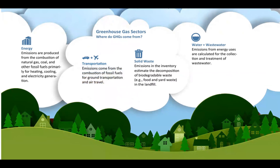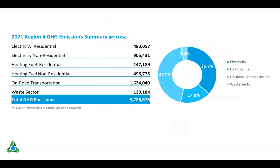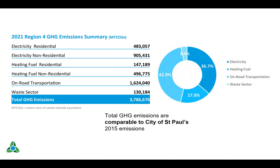We also did a greenhouse gas inventory looking at energy emissions, transportation emissions, and solid waste emissions for the region. The breakdown of emissions by sector includes electricity for residential and non-residential, heating fuel for residential and non-residential, on-road transportation, and waste. Total emissions for the region are about 3.8 million metric tons annually. That emission level is comparable to the city of St. Paul's last reported emissions from 2015 — almost identical, actually. That illustrates that our region has impact, and also opportunity for making contributive change.